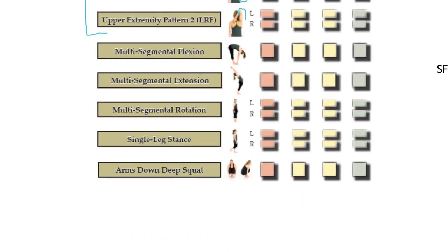The next five movements are global movements. Multi-segmental flexion: the patient stands with feet together, barefoot if possible, and bends forward toward the floor as far as they can reach — this assesses posterior chain length and elasticity. Then, standing with arms overhead, they reach backwards into extension throughout the spine, also assessing overhead shoulder flexion range.